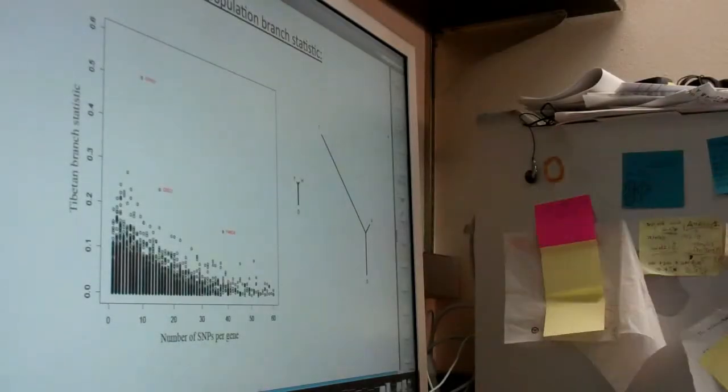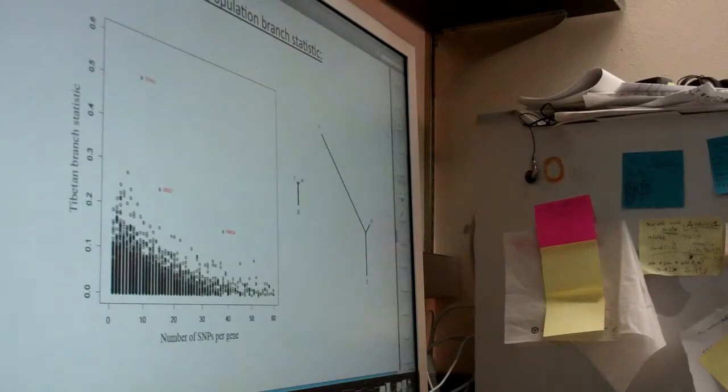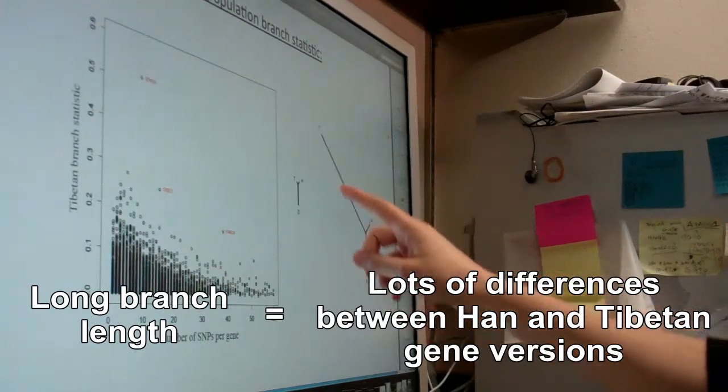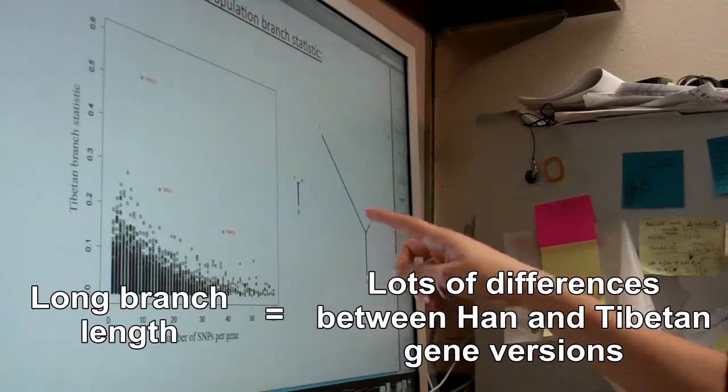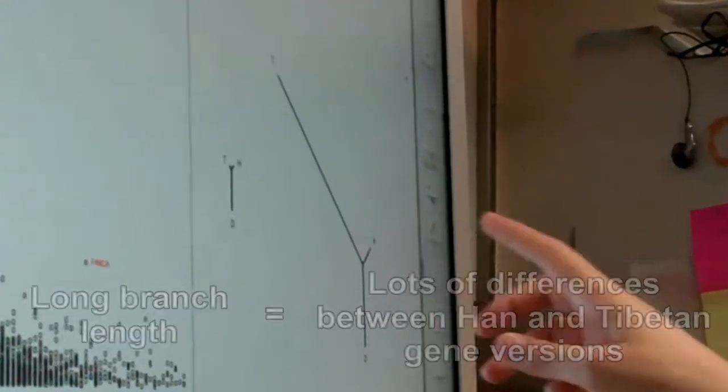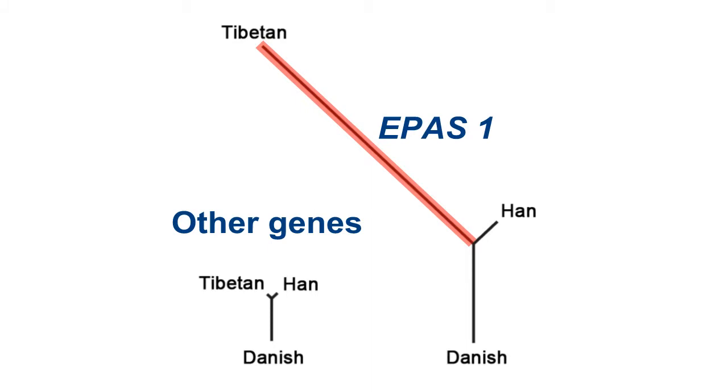The statistic that we designed to detect the signature basically measures the length of this branch, which is basically a measure of the divergence time between Tibetan and Han. And what we find for this gene is that relative to other genes in the genome, this gene has a really large branch length.